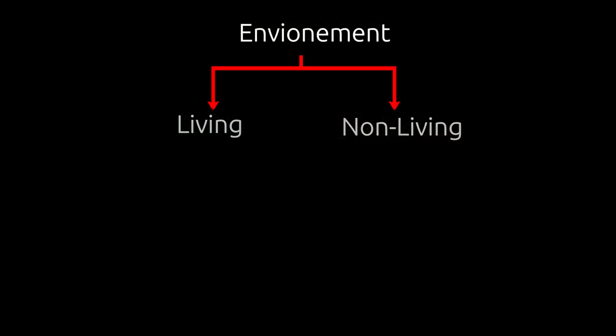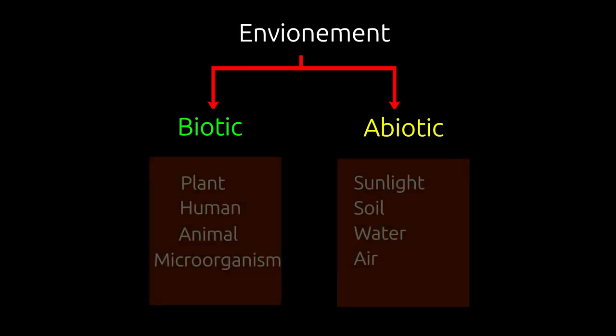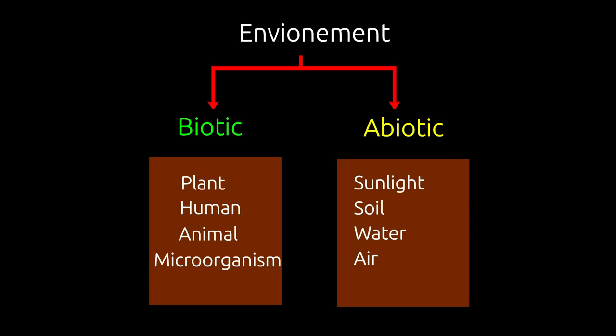Non-living entities in the environment are called abiotic, whereas living things are called biotic. Sunlight, air, soil, and water are examples of abiotic components. Animals, microorganisms, plants, and humans are examples of biotic components.